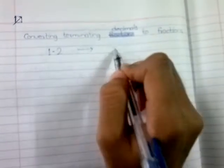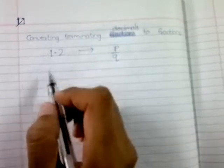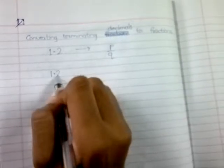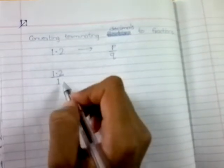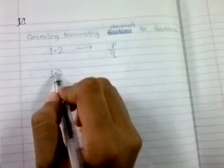Let's see how we can do it. Step 1: write 1.2 as 1.2 divided by 1. 1.2 divided by 1 is 1.2 itself. Now the second step is to remove this decimal point.